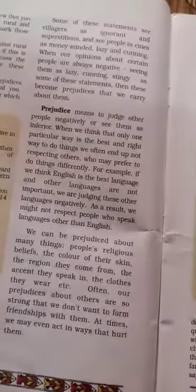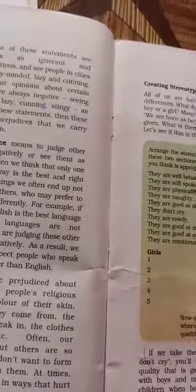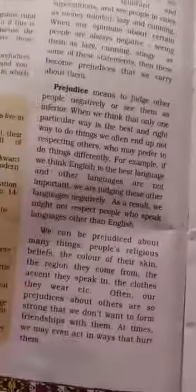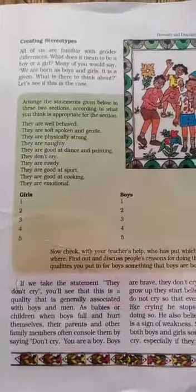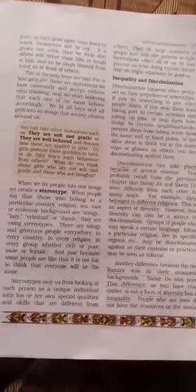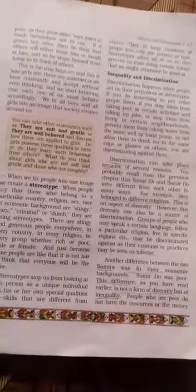Prejudice means to treat other people negatively or to think they are inferior to us. Now, because of diversity, we also face stereotypes. When we fix people into a particular image, we create a stereotype. When people say that those who belong to a particular country, religion, race, or economic background are stingy, lazy, criminal, or dumb, they are using stereotypes.